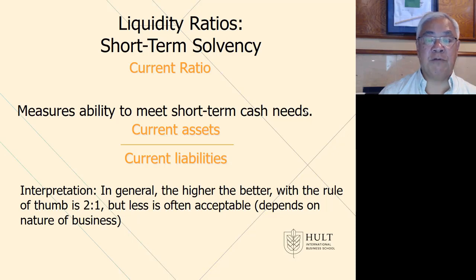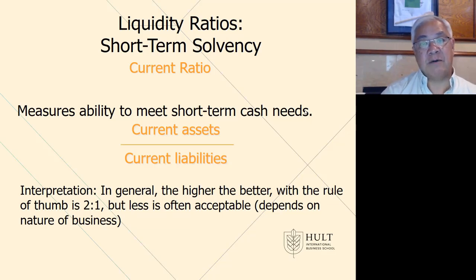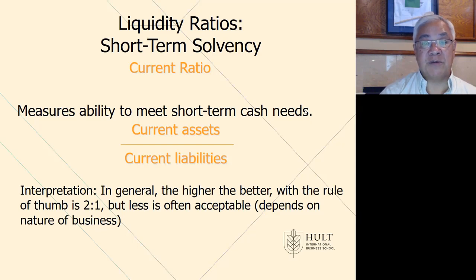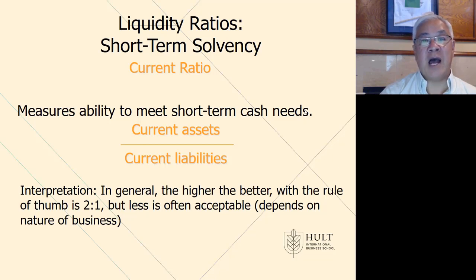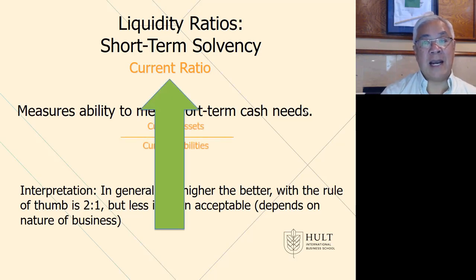For liquidity, we have the current ratio: current assets divided by current liabilities. If the current ratio equals one, the amount of short-term current assets exactly equals the amount of money owed within one year — typically not good. We want that number higher than one, hopefully well in excess of one or two, so we can feel comfortable that we have more assets than we need to pay our bills.